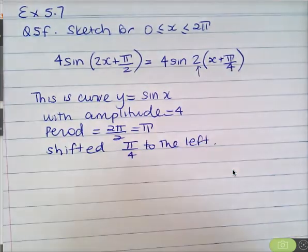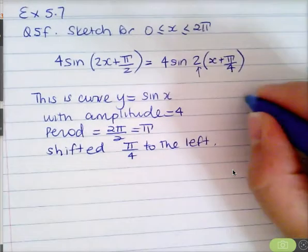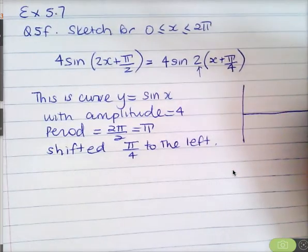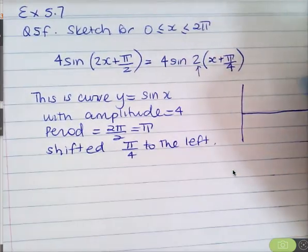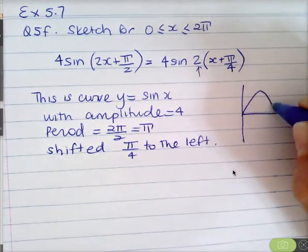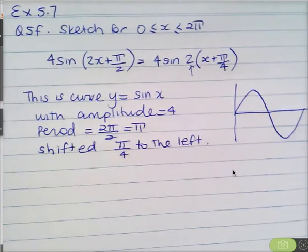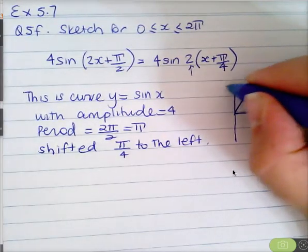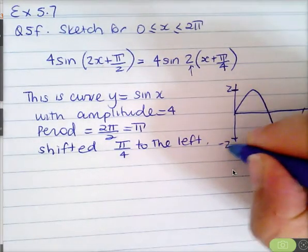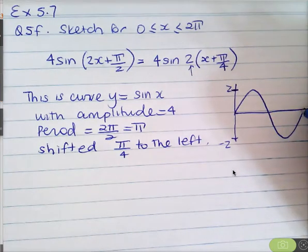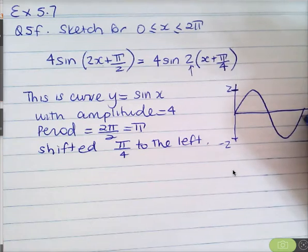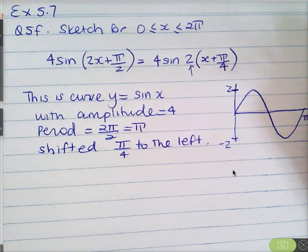So let's have a quick sketch. I'll just draw the sine curve first — this is not the proper curve yet. So I've got the sine curve. The period, instead of being 2π normally, it's π, so that means you'd fit two of them into 2π. If the new period is π, it means you get a full curve in π, but our domain is from 0 to 2π, so you need to get two curves in.